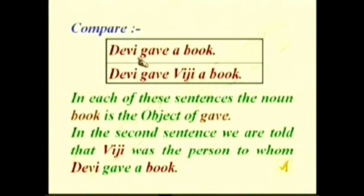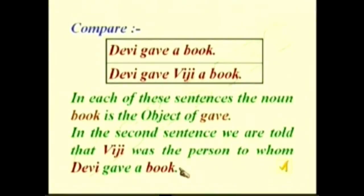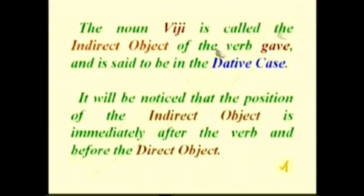Dative case. Compare: 'Devi gave a book' and 'Devi gave Viji a book.' In each sentence the noun book is the object of 'gave.' In the second sentence, Viji is the person to whom Devi gave a book. The noun Viji is called the indirect object, while book is the direct object of the verb 'gave,' and it is said to be in the dative case.